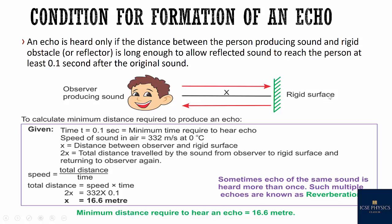And what should be the distance to hear an echo? Let's calculate. We know human ear has persistence of sound for 0.1 second. So time is 0.1 second. Speed of sound is 332 meters per second. Distance is always 2x. So let's find out the speed. Here we can find out the speed as 16.6 meters. So minimum distance required to hear an echo is 16.6 meters.